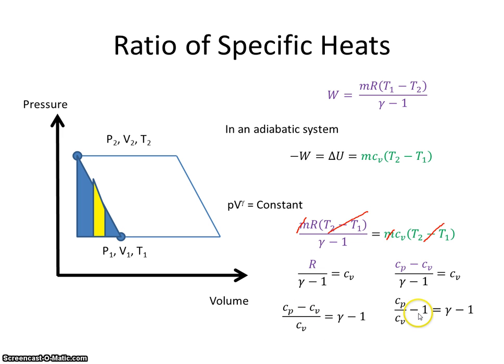So I get cp over cv minus cv over cv, which is 1, is equal to gamma minus 1. The 1s will cancel.